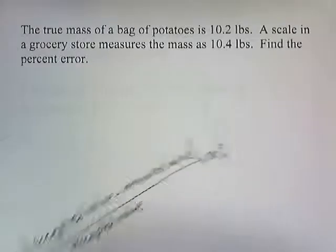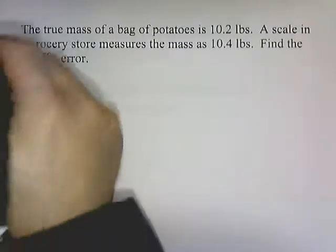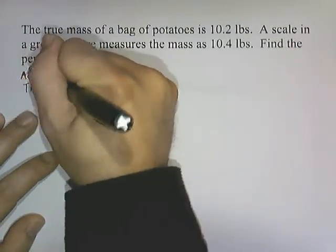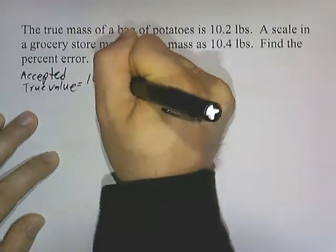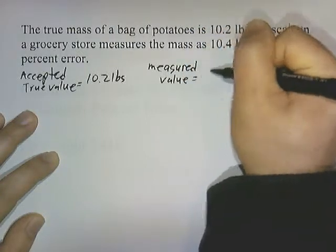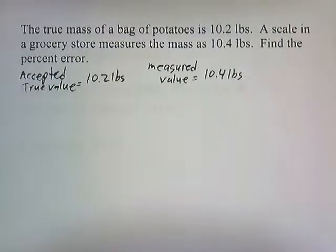Let's try a problem. True mass of a bag of potatoes is 10.2 pounds. The scale in the grocery store measures the mass as 10.4 pounds. Find the percent error. So the accepted value, the accepted true value of the mass, is 10.2 pounds. The measured value is 10.4 pounds. Suppose you're in a grocery store and you're buying potatoes and you throw the potatoes into the scale to see how much you're getting, and it's telling you that you're getting 10.4 pounds when in actuality you're only getting 10.2 pounds. We're getting ripped off a little bit.